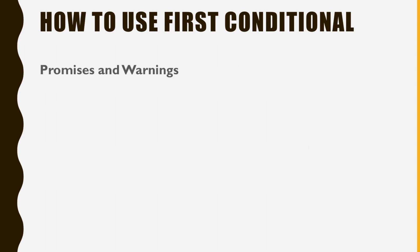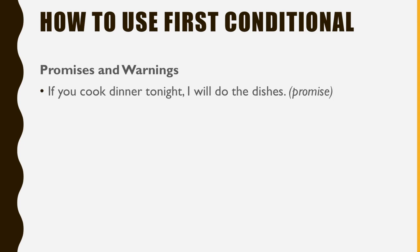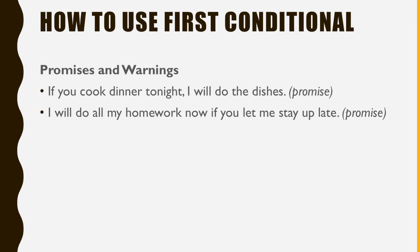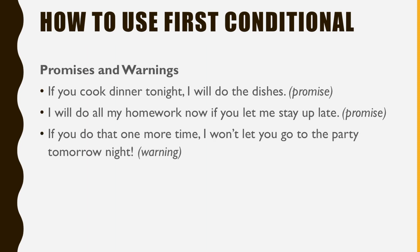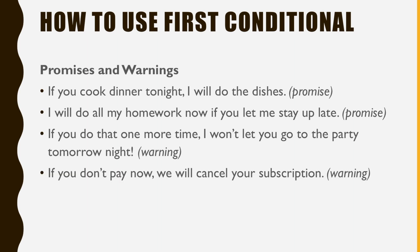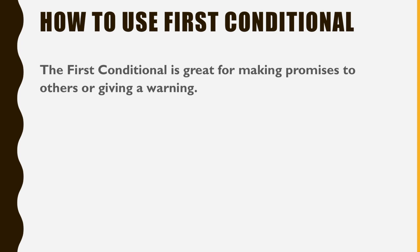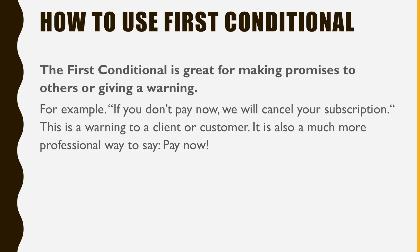Promises and warnings. If you cook dinner tonight, I will do the dishes — this is a promise. I will do all my homework now if you let me stay up late — another promise. If you do that one more time, I won't let you go to the party tomorrow night — this is a warning. If you don't pay now, we will cancel your subscription — another warning.